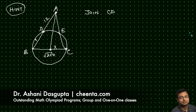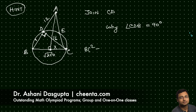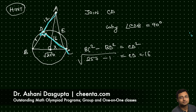The hint is: join CD. Now, angle CDB is 90 degrees — can you tell me why in the comments? Using the Pythagoras theorem: BC² − BD² = CD², so 257 − 1 = 256, giving CD = 16. Then applying Pythagoras in triangle ACD gives AC = 20.